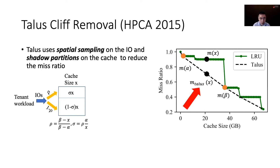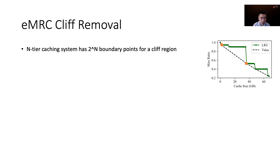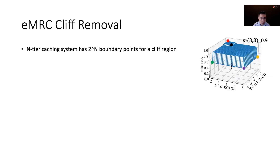One important takeaway from Talos is that each miss ratio after a shadow partition is only related to one of the boundary point miss ratios. Miss ratio after the first partition is only related to m(alpha), and miss ratio after the second partition is only related to m(beta). So in single-tier caching, there are two boundary points for a cliff region. In two-tier caching, there are four boundary points. In fact, in an n-tier caching system, there will be 2^n boundary points for a cliff region.